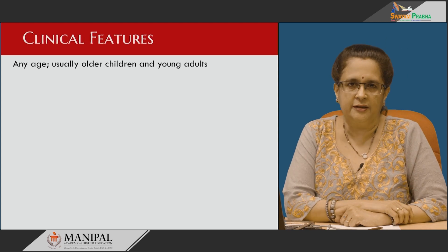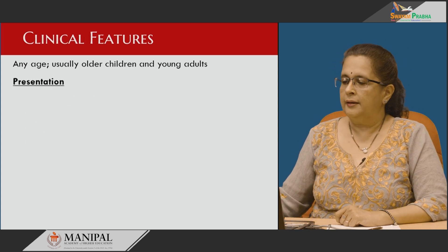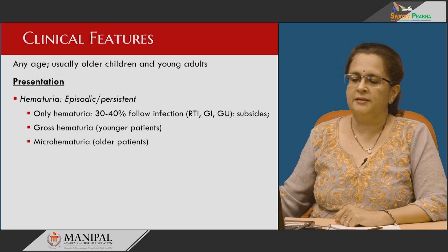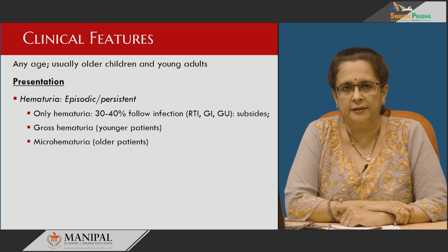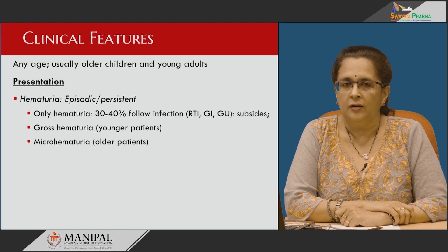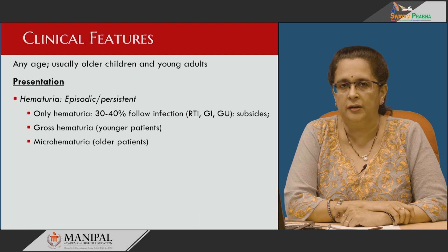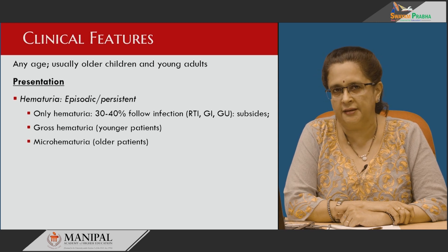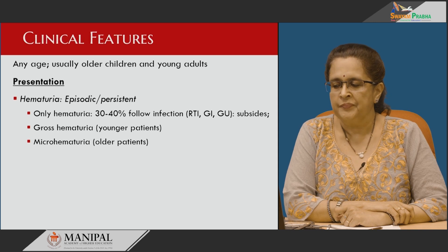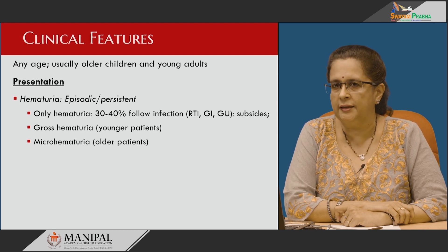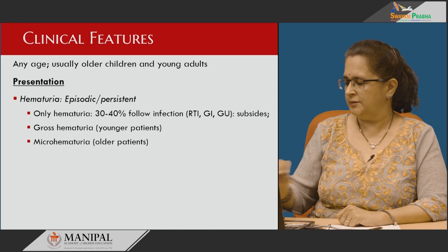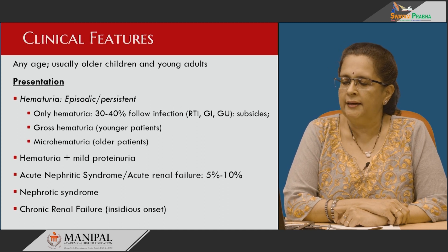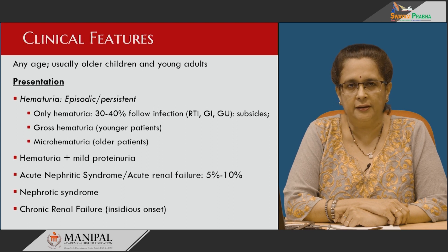Clinically, IgA nephropathy usually affects older children and young adults. Presentation is as episodic or persistent hematuria; hematuria alone is seen in 30 to 40 percent of patients and often follows an infection — respiratory tract, gastrointestinal, or genitourinary. The micro hematuria is episodic, meaning it subsides and then recurs. Gross hematuria is usually seen in younger patients, whereas micro hematuria is seen in older individuals. It can also present as hematuria with mild proteinuria, and rarely as acute nephrotic syndrome or acute renal failure in 5 to 10 percent of patients.